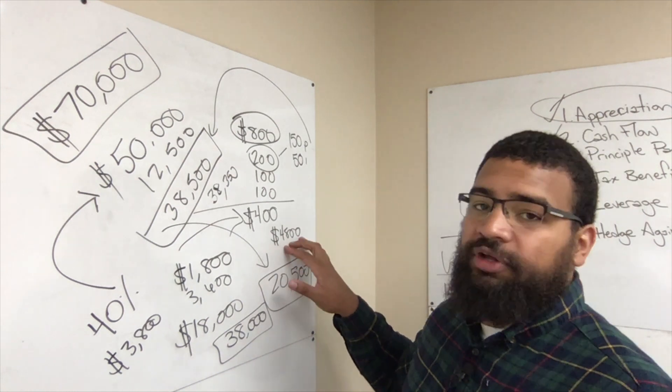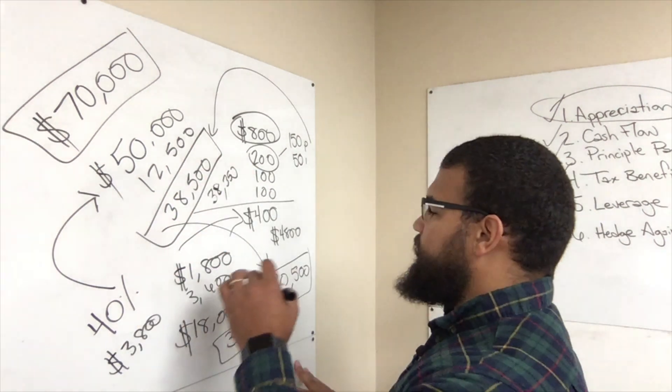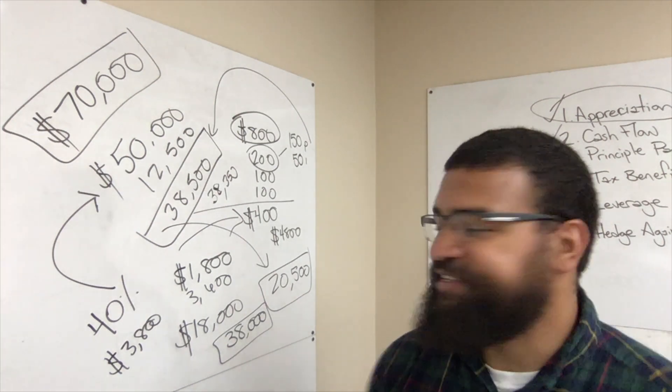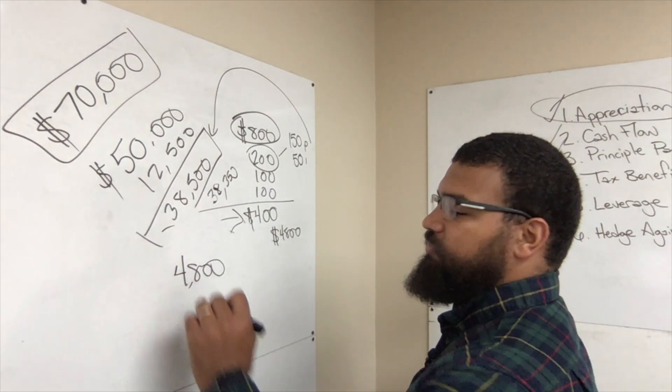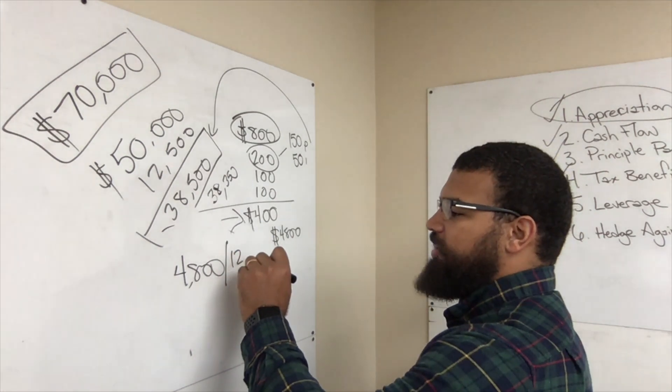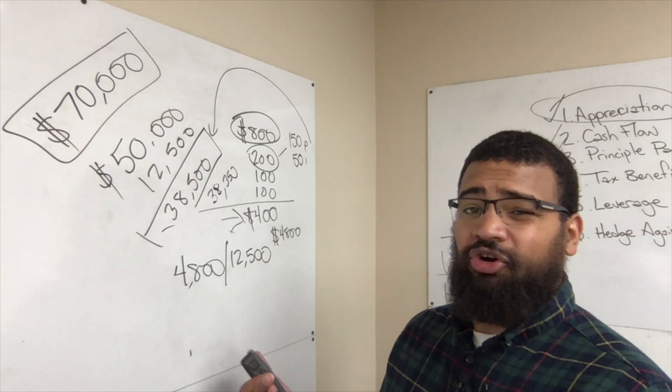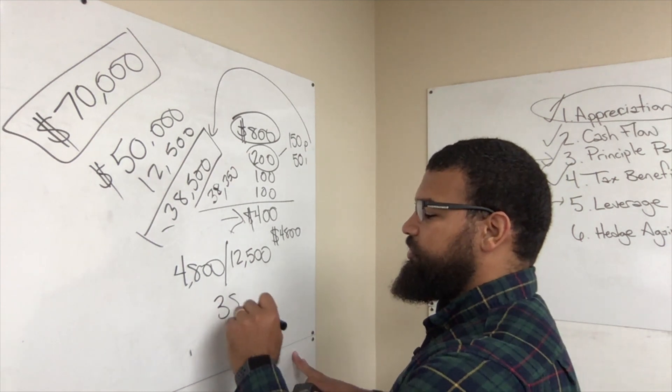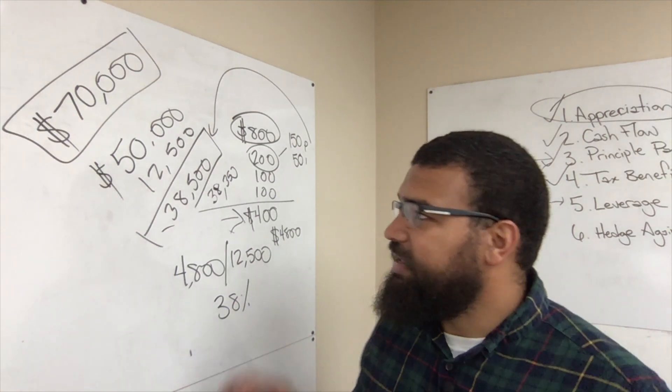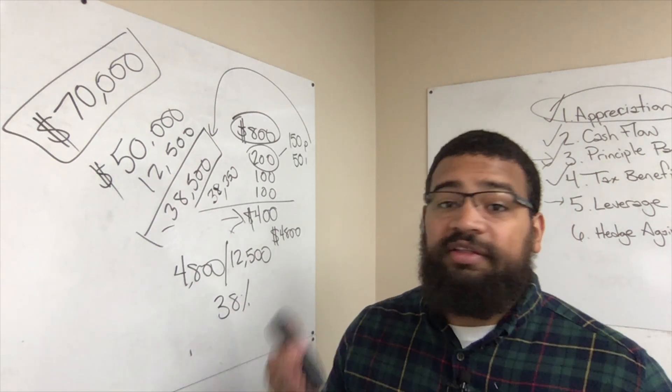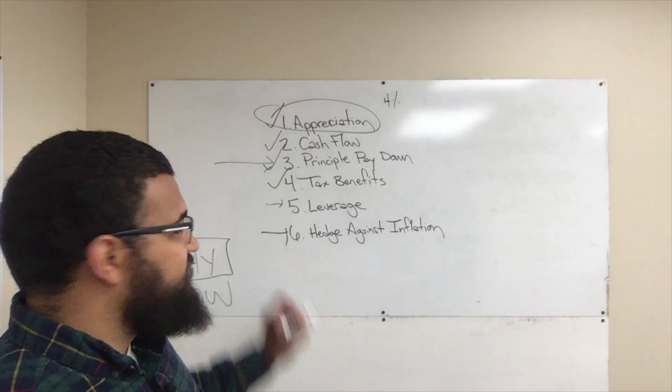So if you're to do the $4,800 divided by the actual amount of money that you put out, $12,500, let me just erase stuff. So your cash flow is $4,800 per year. The amount of money that you put out of your pocket is $12,500. So in terms of your rate of return, or your cash on cash return is what it's called, that's 38%. Now what other investment vehicle can you make 38% cash on cash in? And I get that I just made up these numbers, but you can find deals like this all day long here in Ohio.